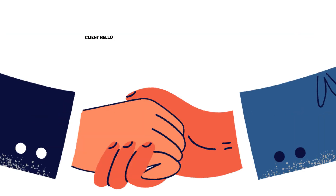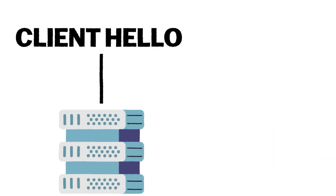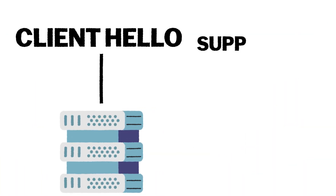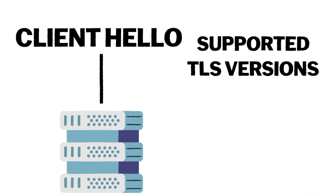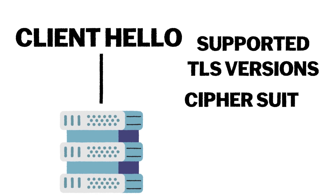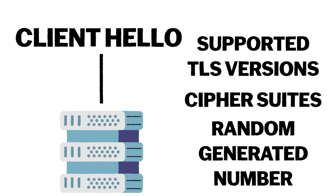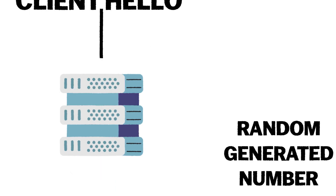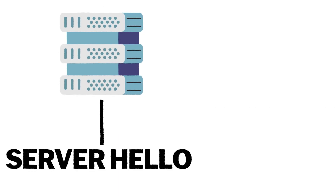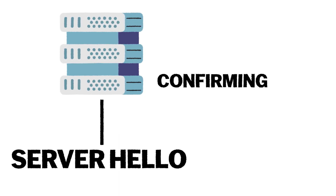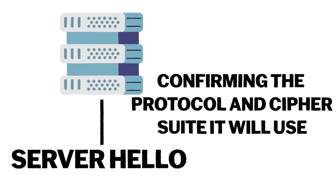The client sends a Client Hello message to the server, which includes the supported TLS versions, cipher suites, and a randomly generated number. This starts the negotiation. The server responds with a Server Hello message, confirming the protocol and cipher suite it will use.